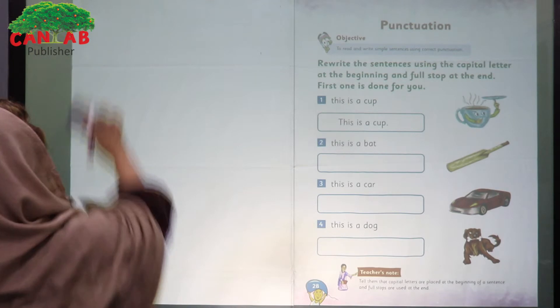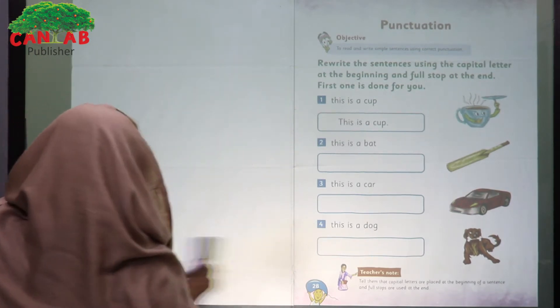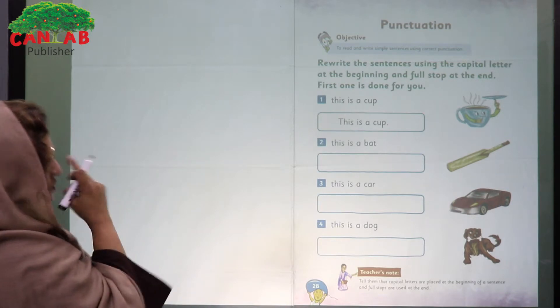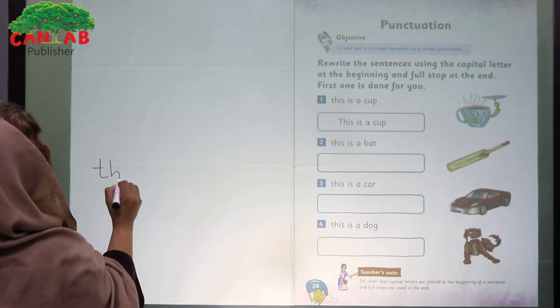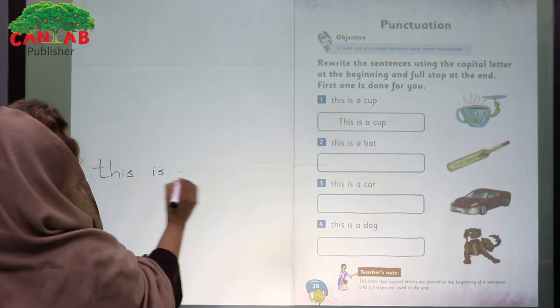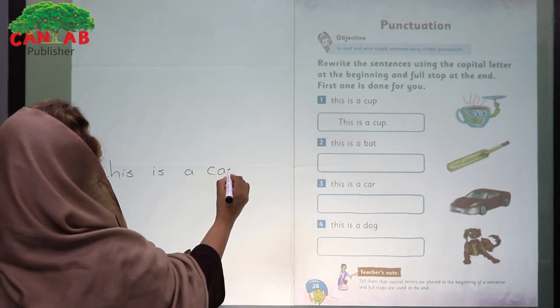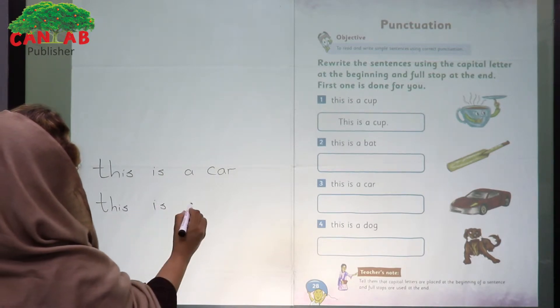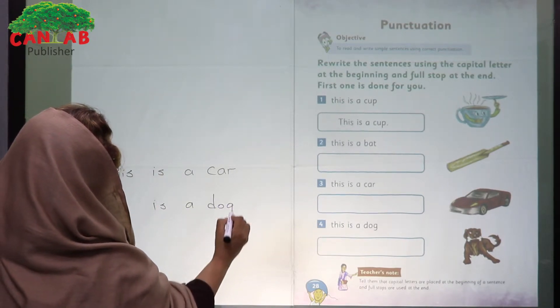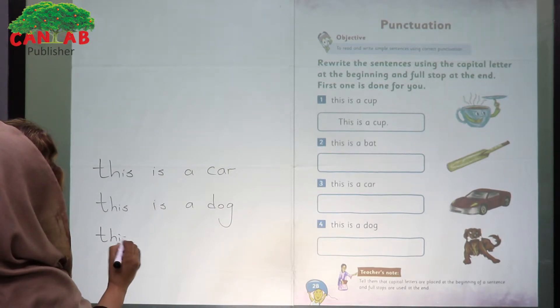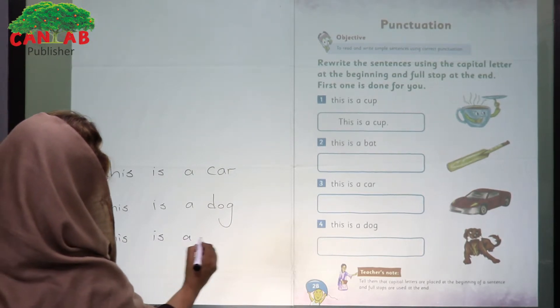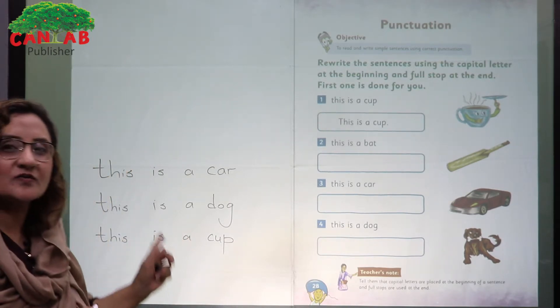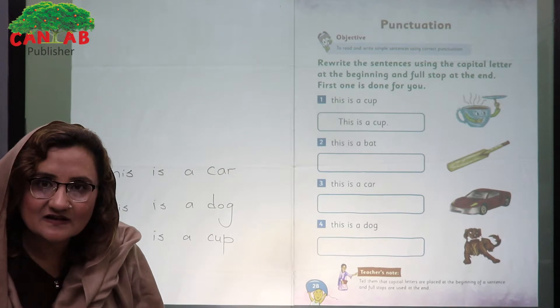Look at here. This is a car. This is a dog. This is a cup. Is there something wrong with these sentences? Who can tell me?